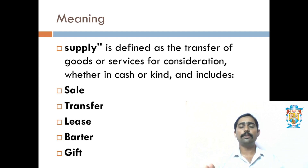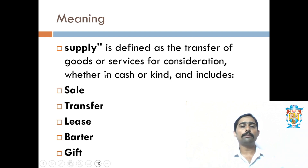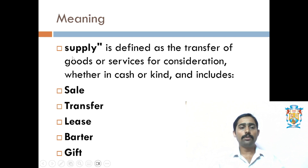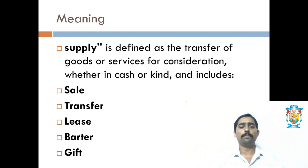Then there is gift, a kind of supply where a product is given without any consideration — nothing is received in return. To summarize, supply is something where a transfer takes place, and under GST both goods and services, or one among them, will be considered, with the transfer occurring for a consideration — that means something in return.